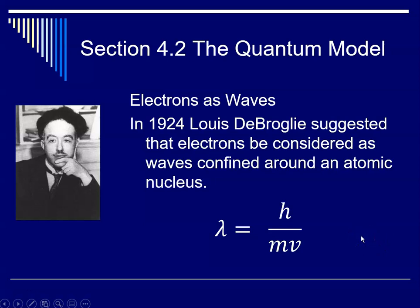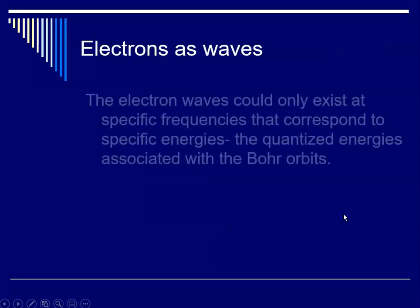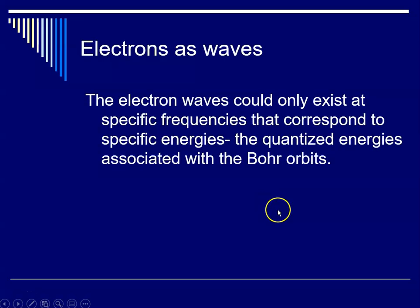So the electron waves can only exist at these specific frequencies that correspond to specific energies. And these are the same quantized energies that we talked about with the Bohr model and the Bohr orbits.